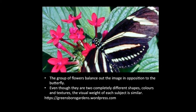Here we have an image of a butterfly and some flowers, and the group of flowers — even though it's a completely different object to the butterfly — balances out the image in opposition to the butterfly. Even though they're completely different shapes, colours, and textures, the visual weight of each subject is very similar.